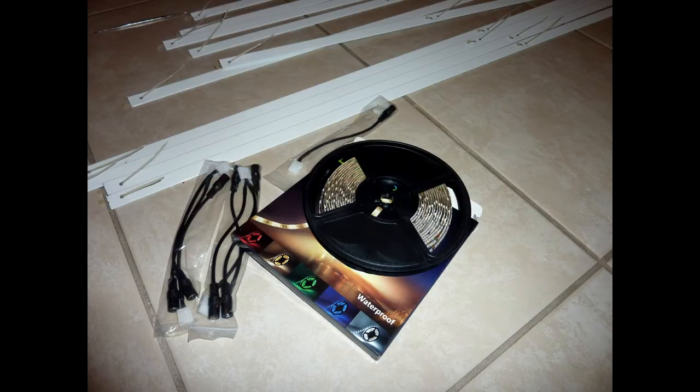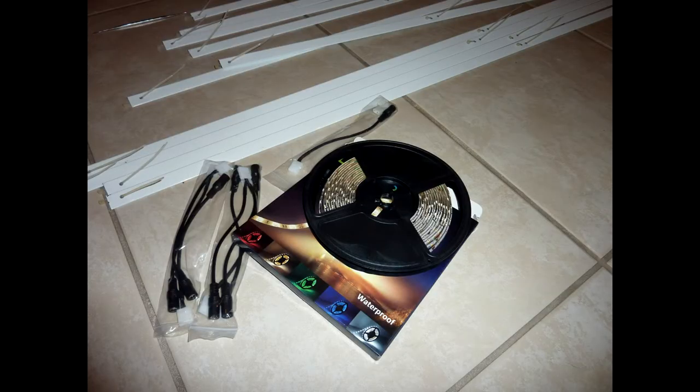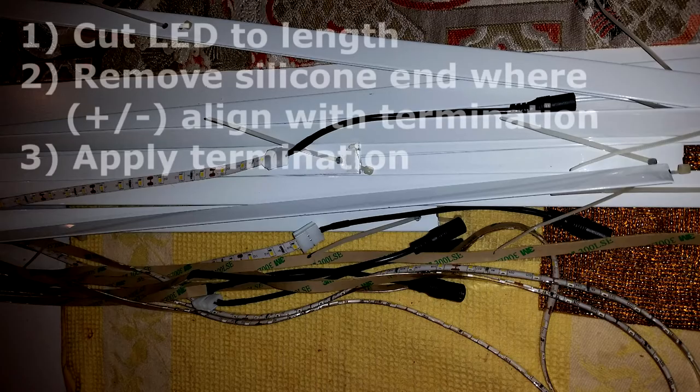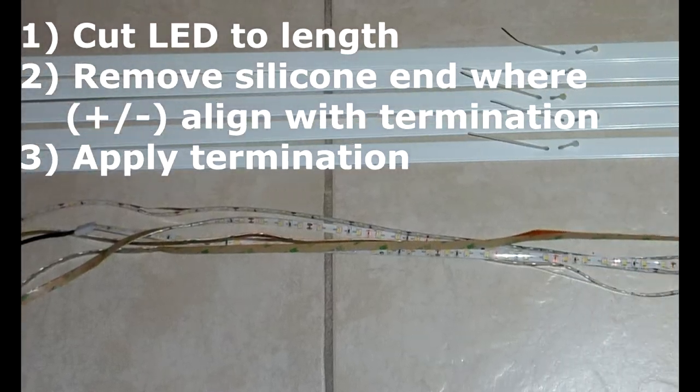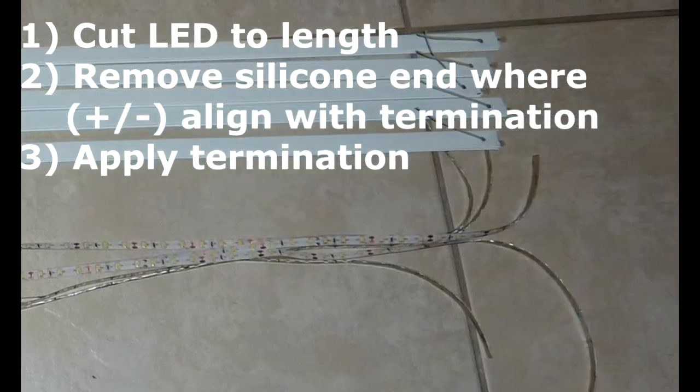If you're putting LED across the entire length of your shelf, the procedure is really easy. Cut your LEDs to length. Go ahead and find the appropriate end that the connector is going to go on. Remove the silicone, put the terminator on and you are done and ready to install that string.